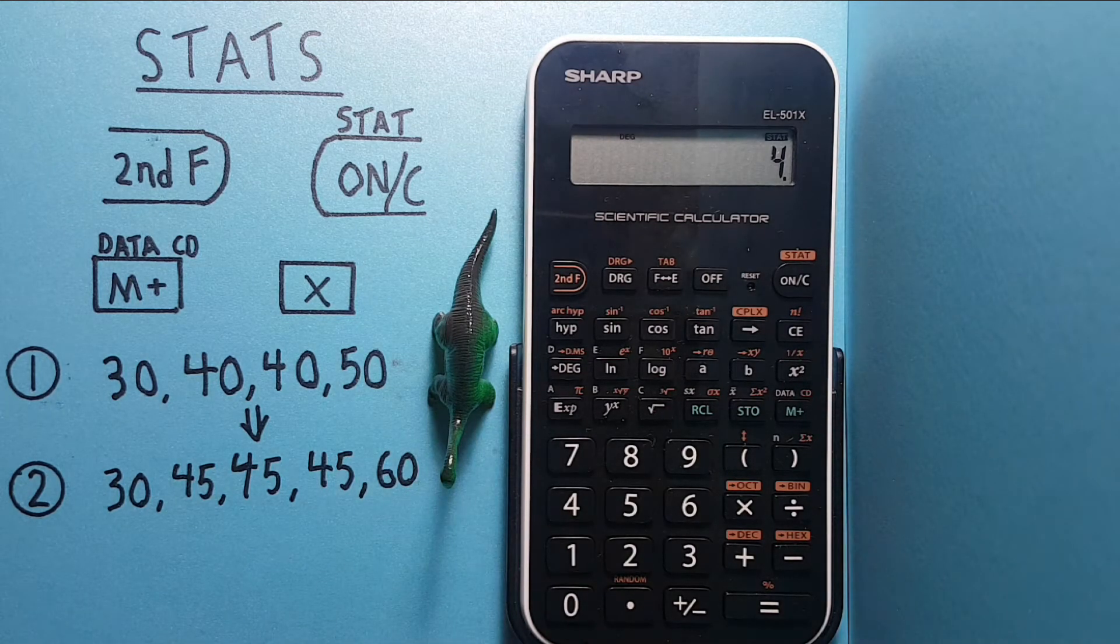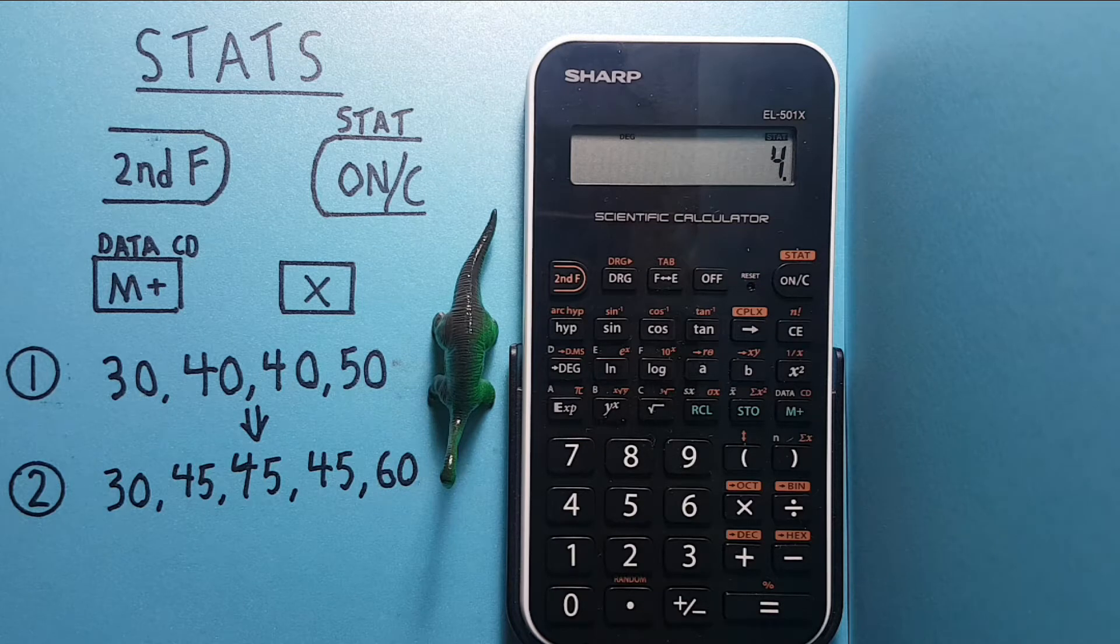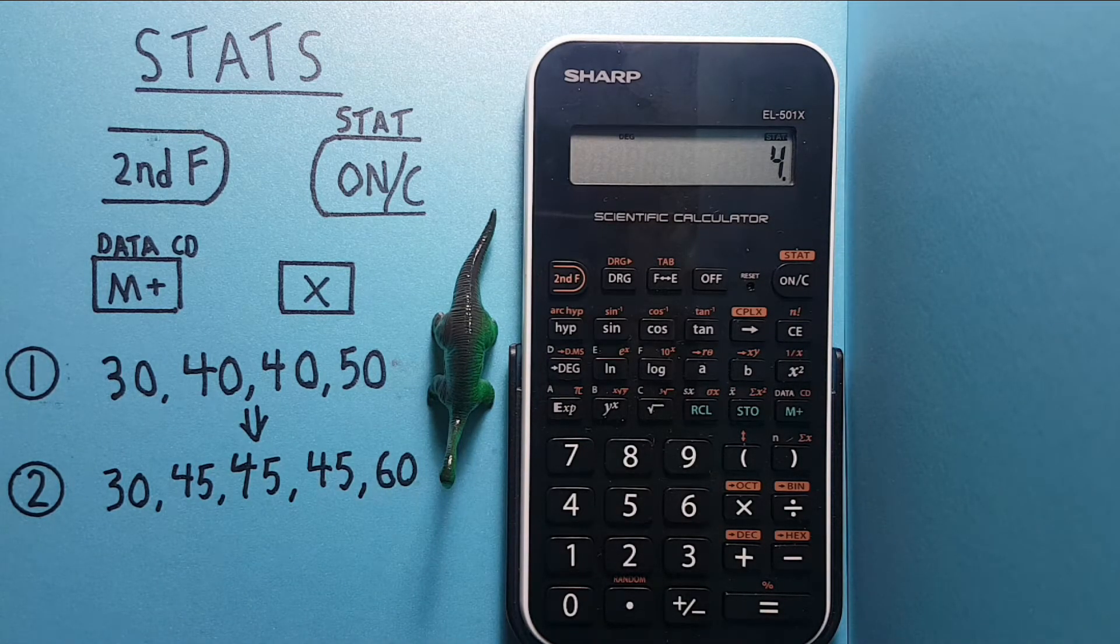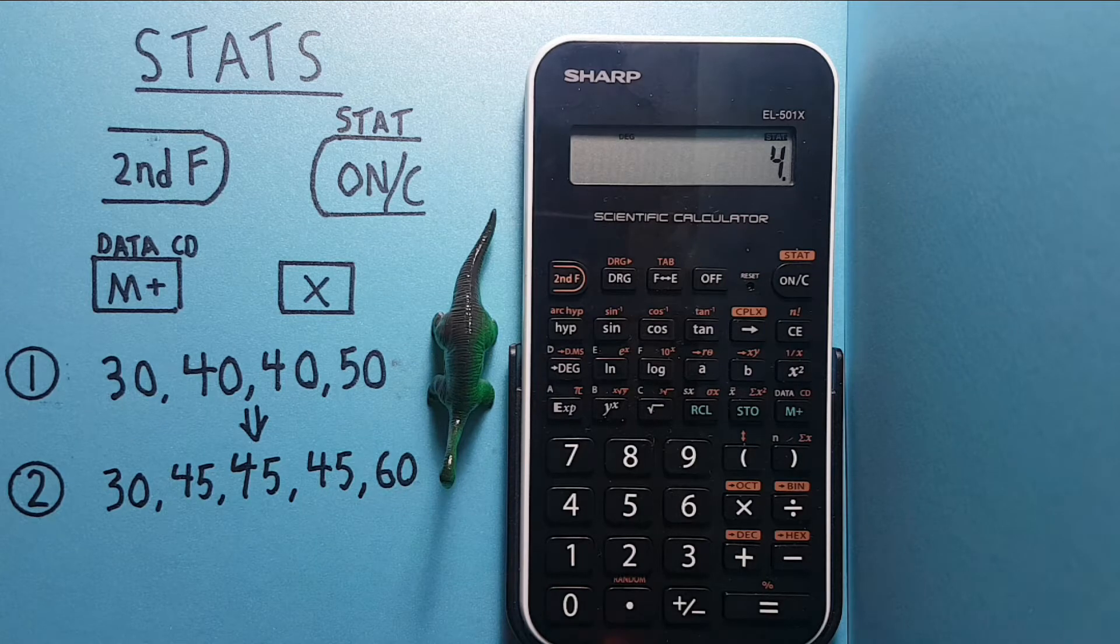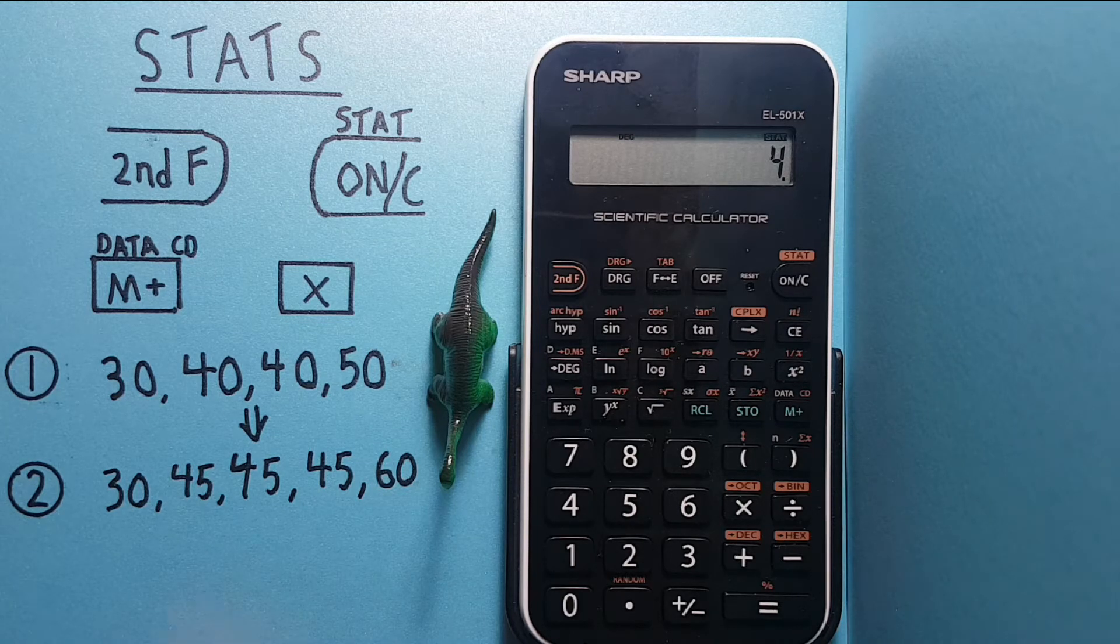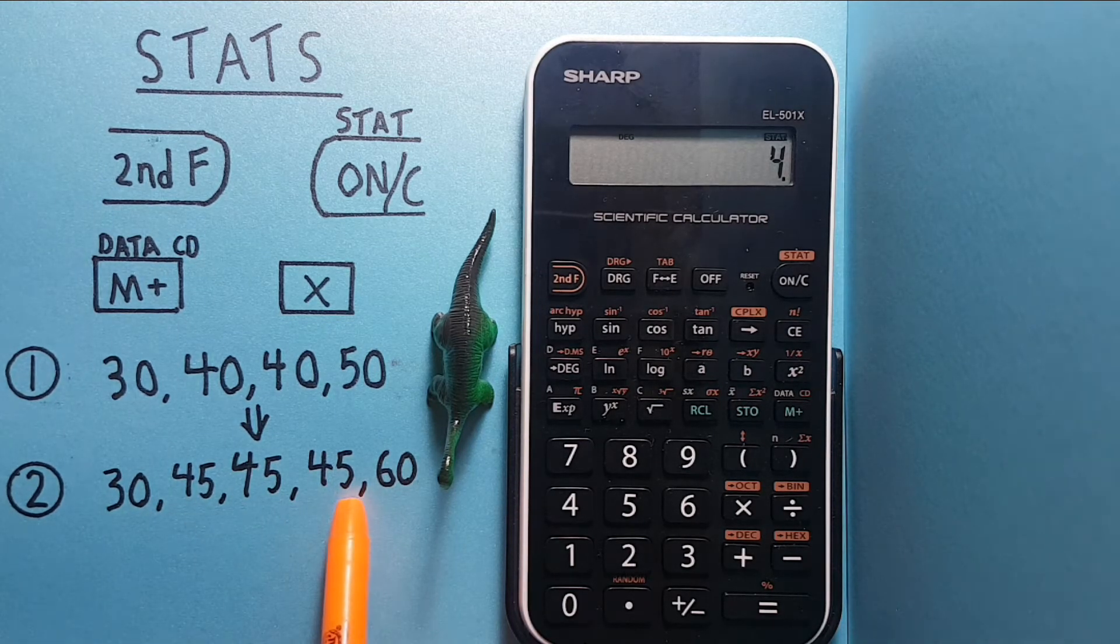But what happens if we make a mistake when entering our numbers? To remove a number, we use the M plus CD part of that key. So let's say we didn't mean to enter 50. This is our actual data set here, and we made a mistake.